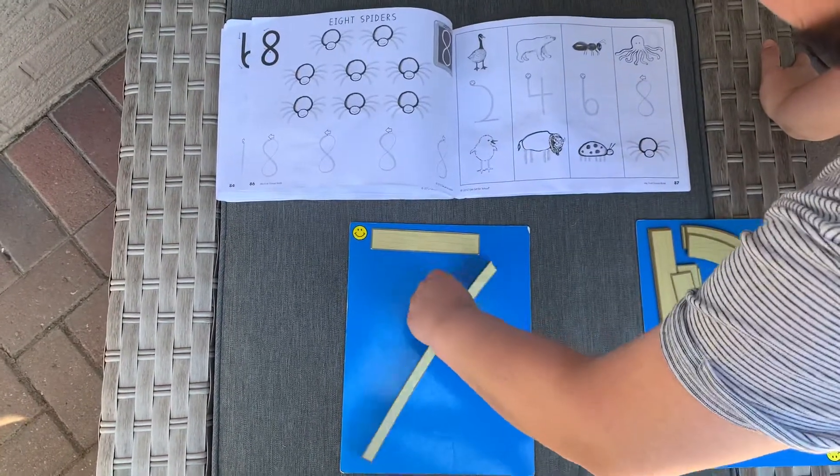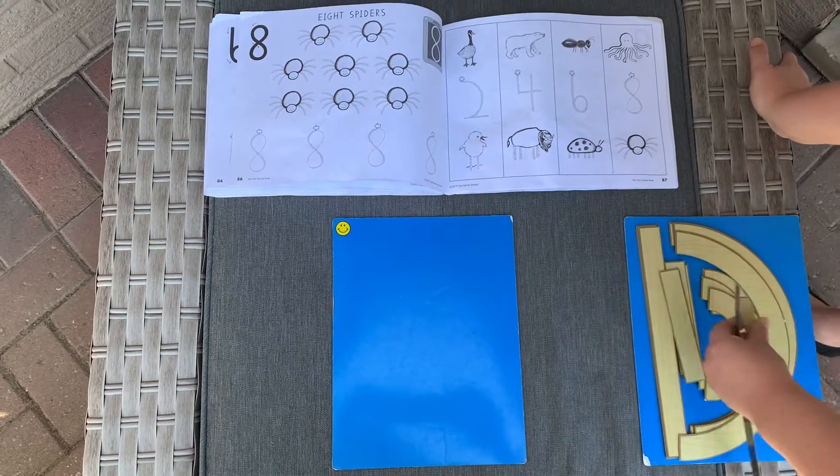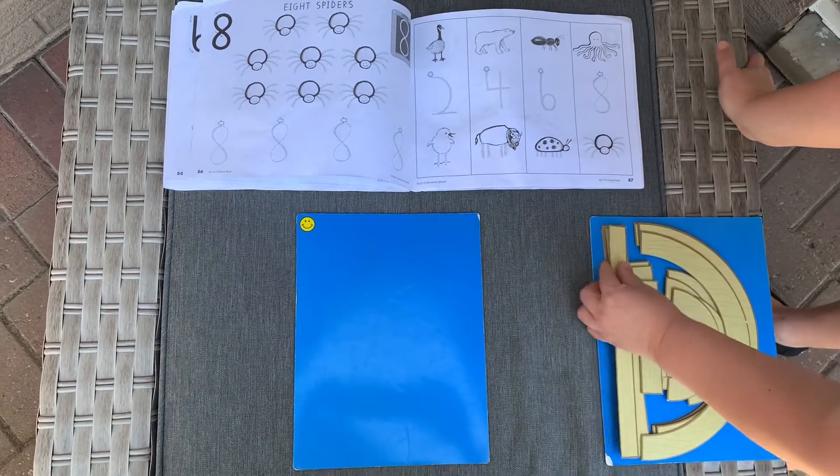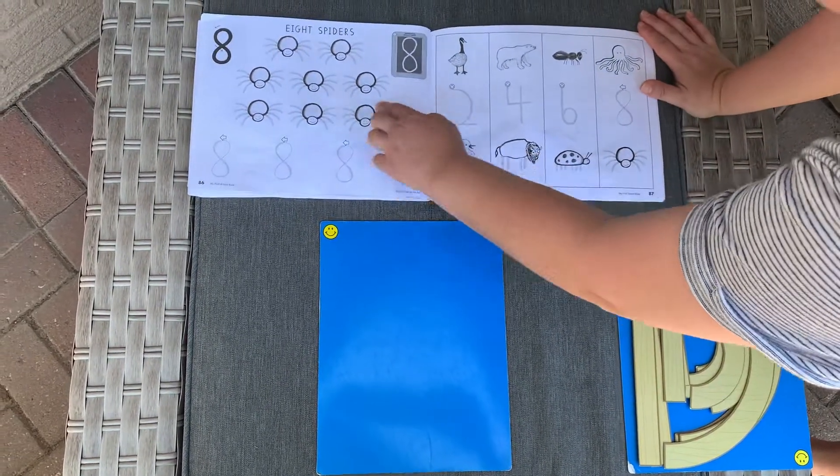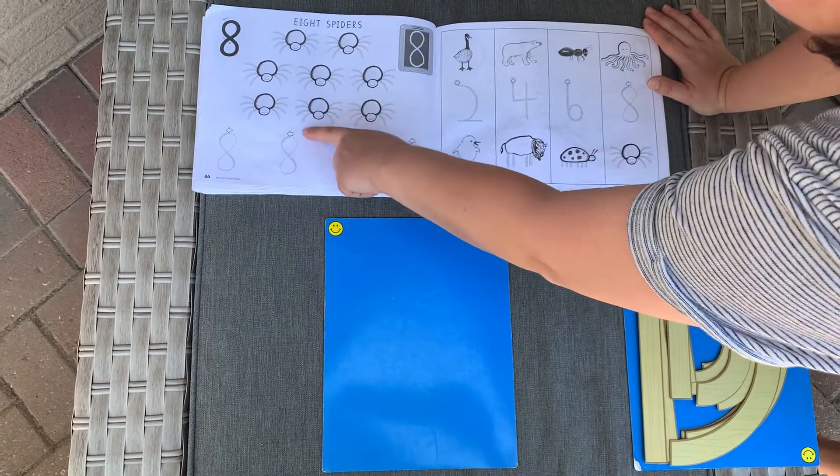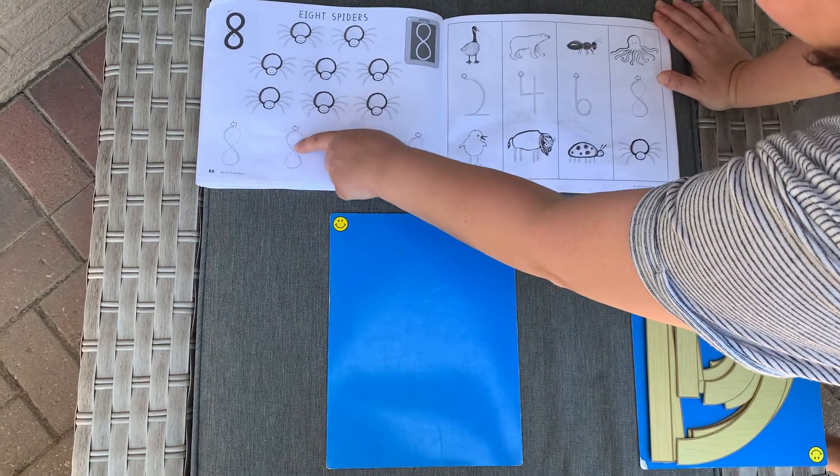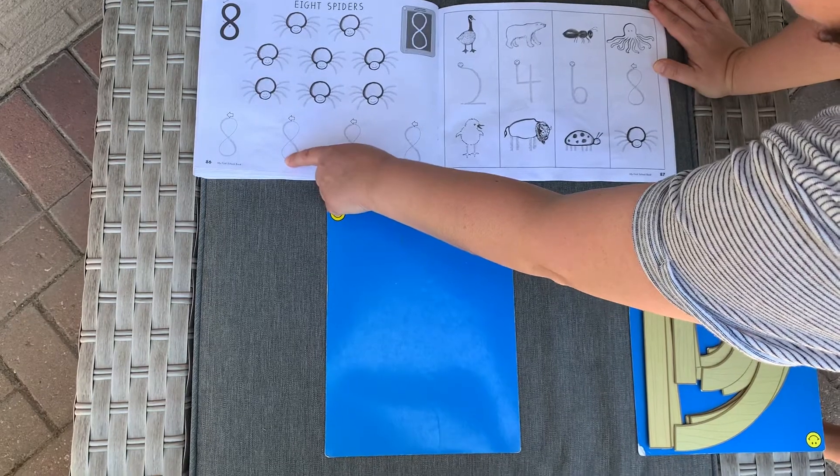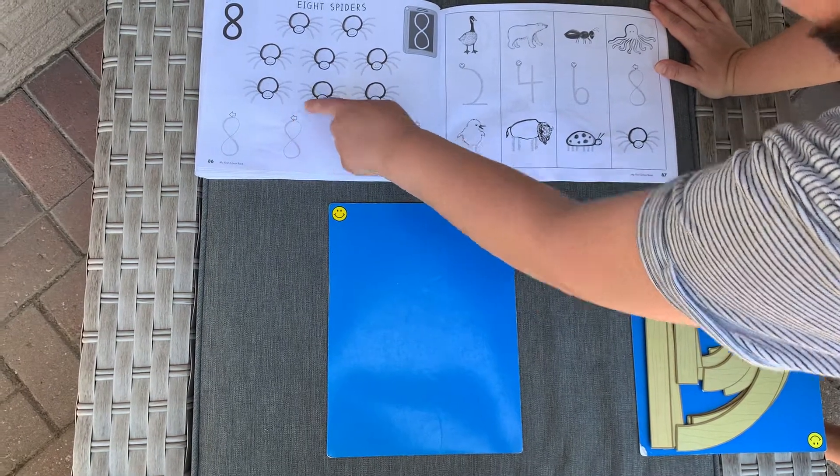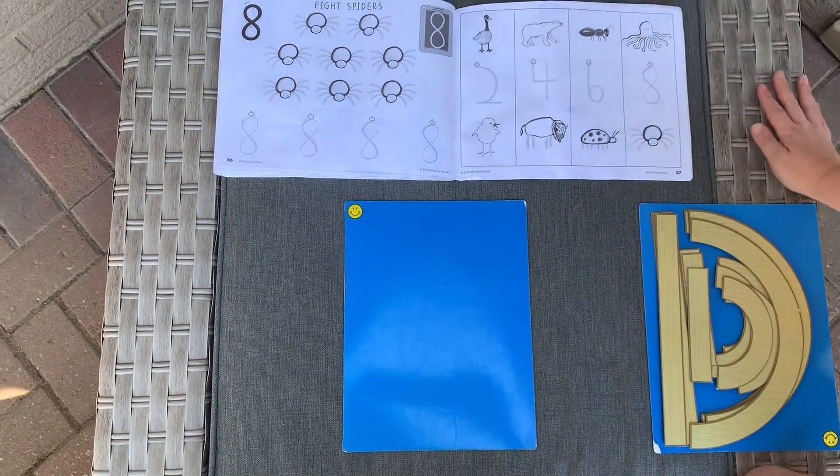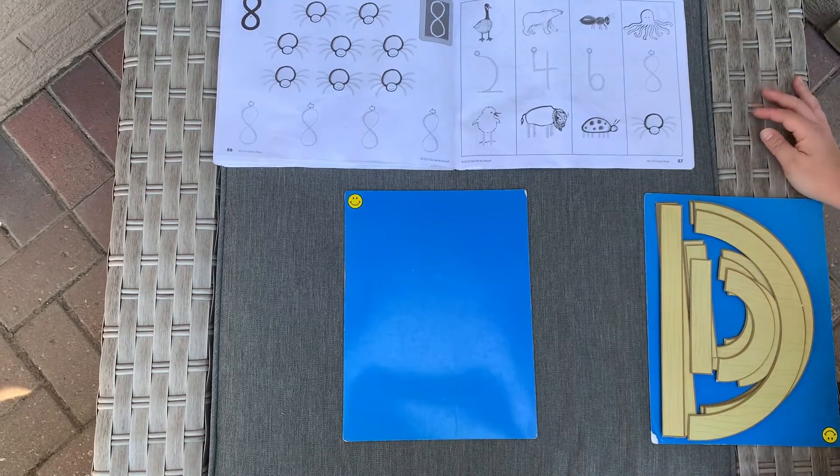Let's move on to number eight. Number eight is a curvy number. If you look here where the arrow is, you're kind of making the letter S and then you're going to curve around. So let's see if we can do this with our wood pieces.